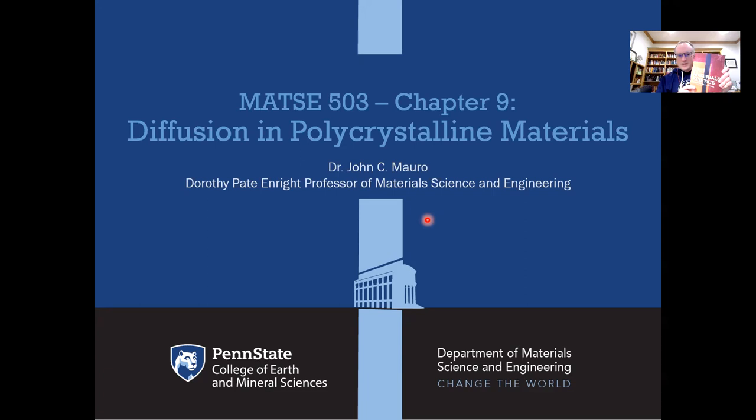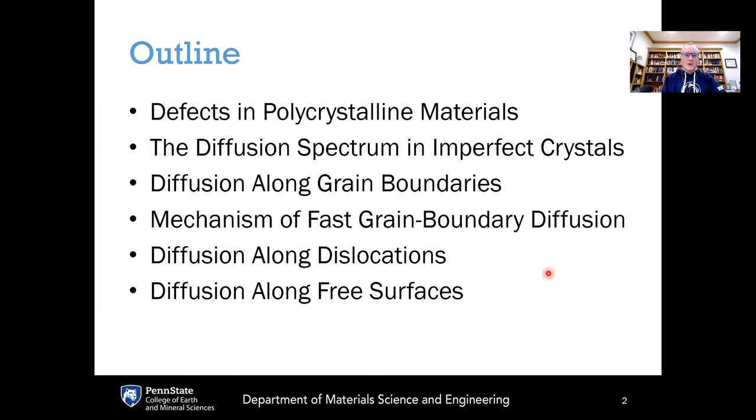Hello, we are on chapter nine in materials kinetics, which is diffusion in polycrystalline materials. If you recall last time in chapter eight, we were dealing with diffusion in single crystals. We started with the perfect crystal, then we introduced point defects, and we gave some examples from both metallic single crystals as well as ionic single crystals. So today in chapter nine, we are going to extend this into polycrystalline materials.